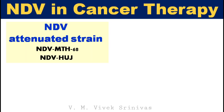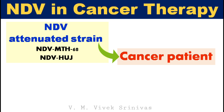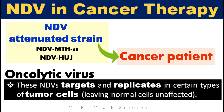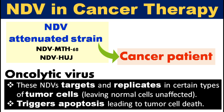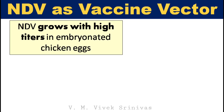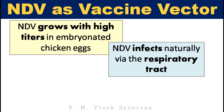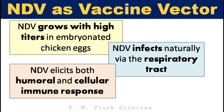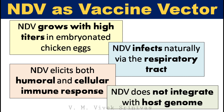Some attenuated Newcastle disease strains are used as cancer therapy in cancer patients. This attenuated Newcastle disease strain targets and replicates in certain types of tumor cells while leaving normal cells unaffected. These oncolytic Newcastle disease virus strains cause tumor cell death by triggering apoptosis in tumor cells. This virus can also be used as a vector in recombinant vaccines due to advantages such as: it can be grown in high titers in embryonated chicken eggs; it infects naturally through the respiratory tract and is thus useful to deliver protective antigens from respiratory pathogens; it can bring out both humoral and cellular immune responses; and it does not integrate with the host genome as it replicates in the host cytoplasm, showing least genetic recombination.